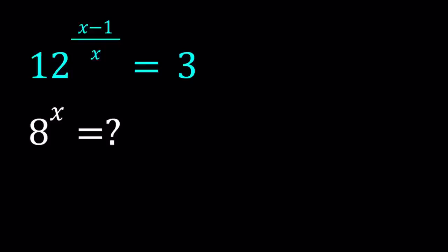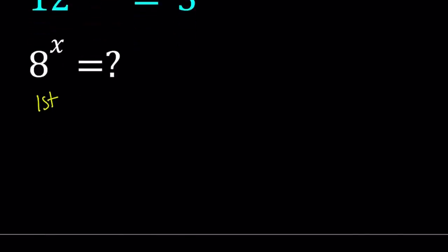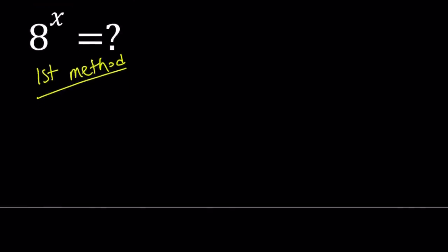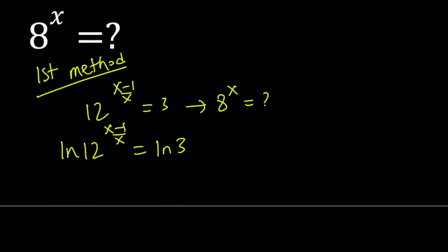Let's start with the first one. For my first method I'm going to align both sides. So we have 12 to the power x minus 1 over x equals 3, and from here we're supposed to find 8 to the power x. Let's go ahead and align both sides. By the way you don't have to use ln, you can use any base - log base 10, natural log, base 3, base 12, whatever. It doesn't matter, you're going to get the same thing.